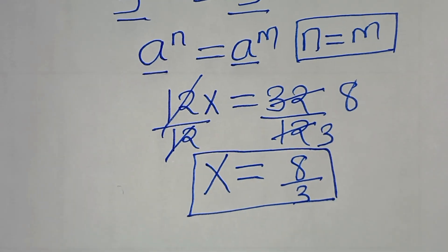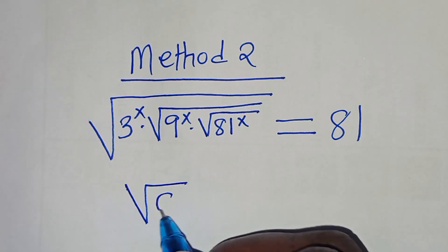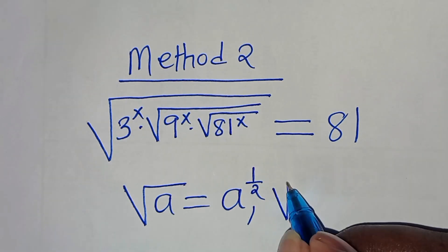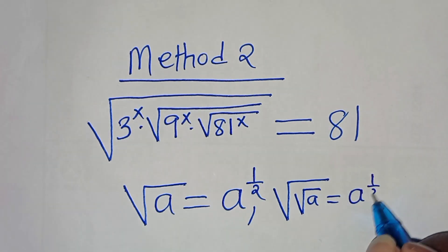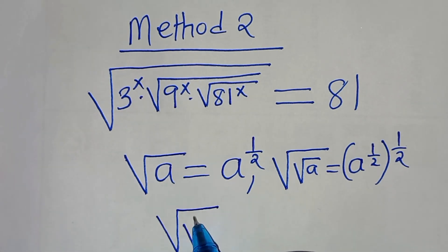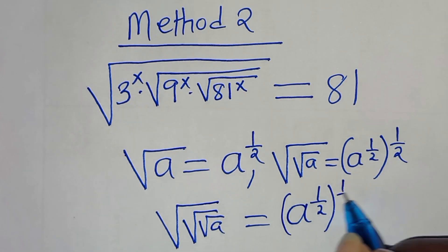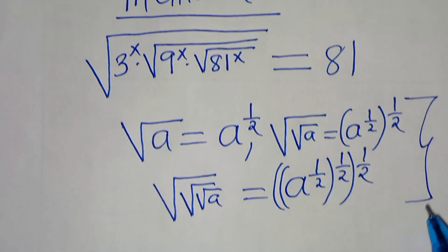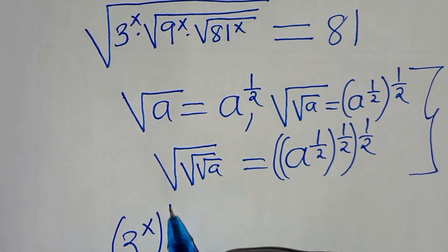Now let's apply Method 2. For Method 2, we use the property that the square root of a can be expressed as a to the power of one half. We can also express the square root of a square root of a as a to the power of one half raised to the power of one half. And the square root of the square root of the square root of a is a to the power of one half, raised to the power of one half, raised to the power of one half. Applying this property, the first term is 3 to the power of x raised to the power of one half.